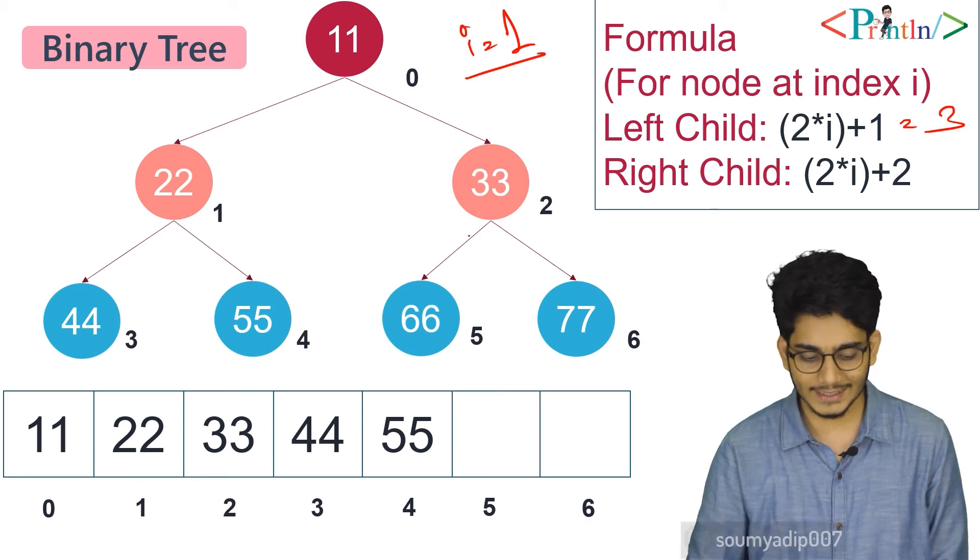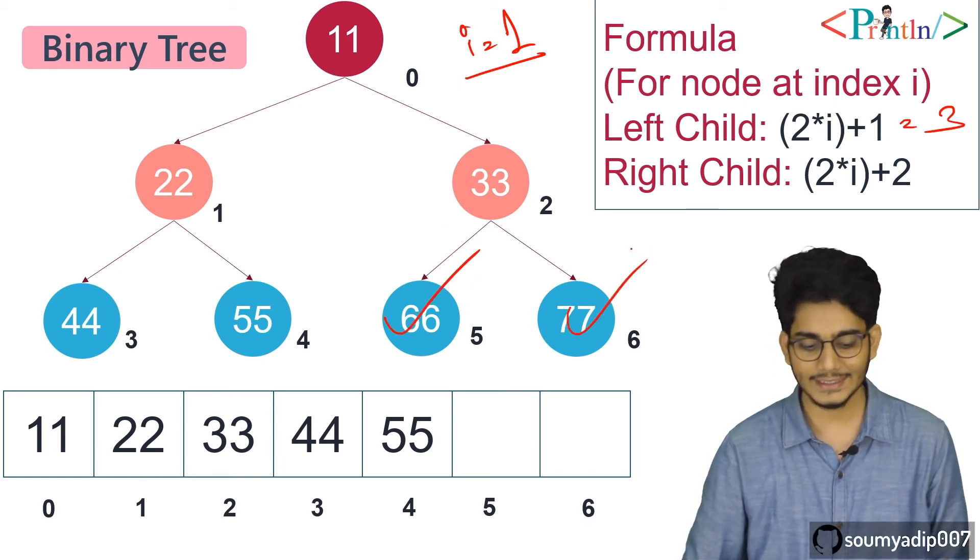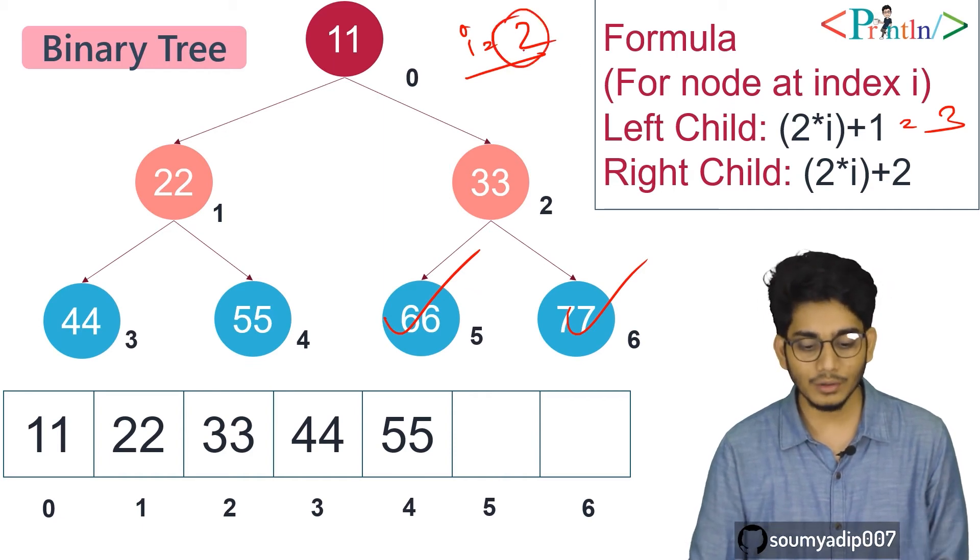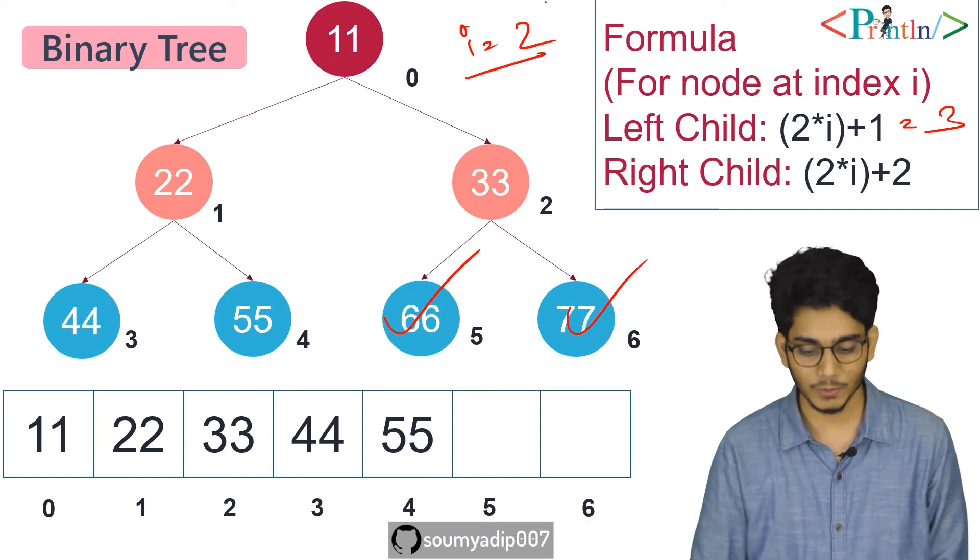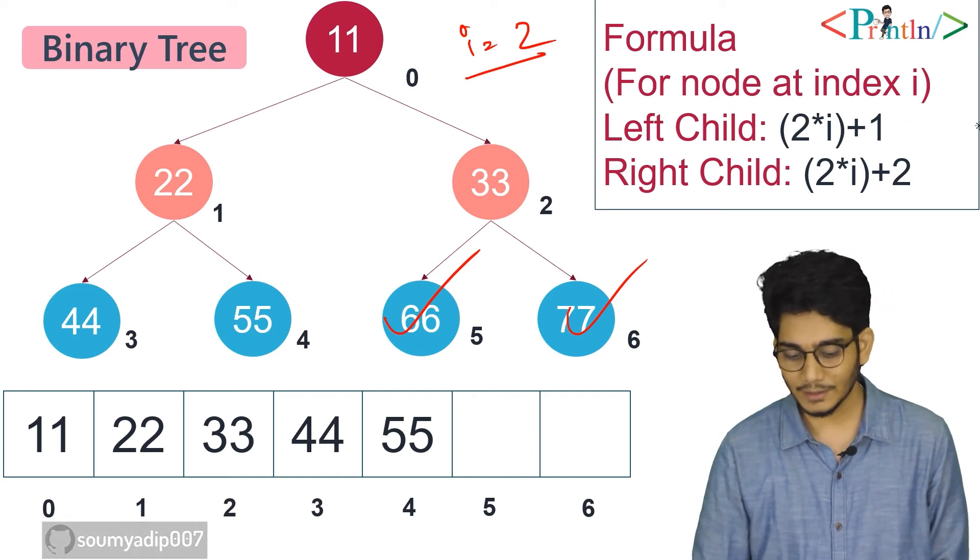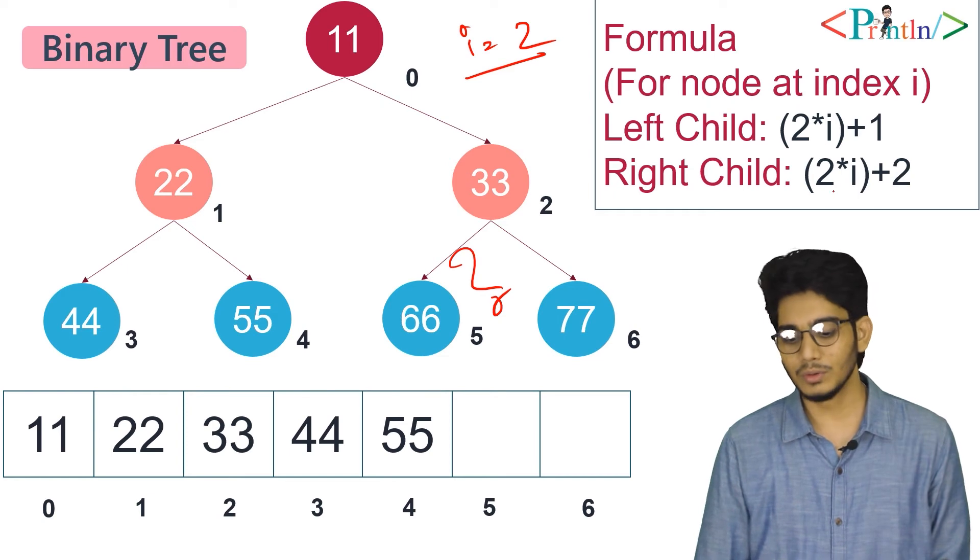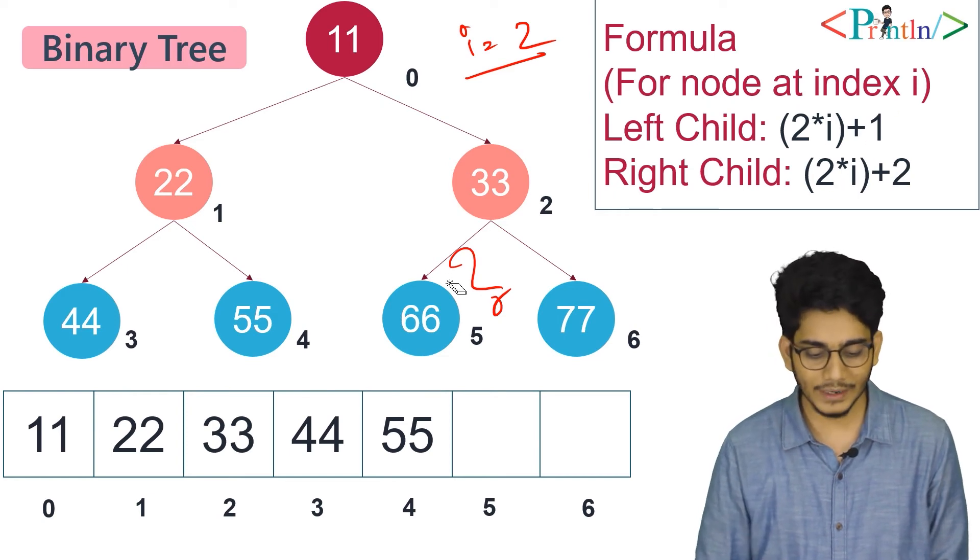Now let's insert 66 and 77. What is the value of the parent node? The value of its parent node is 2. Where will we insert 66? 2*2 = 4, plus 1 = 5, so we'll insert 66 at index 5.